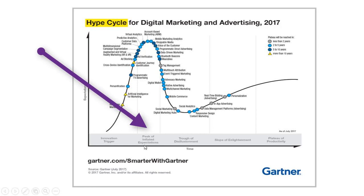The fact that a technology is in this phase means that the market's expectations for the technology have peaked and the market has slowly started to lose interest in the specific technology. This happens perhaps due to the technology not living up to the hype or for other reasons. As Gartner states, the only organizations making money in this phase are conference organizers and magazine publishers who are simply discussing the topic.